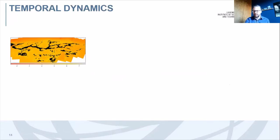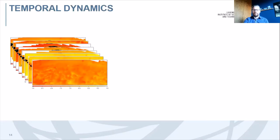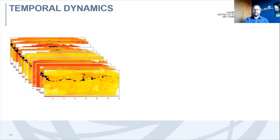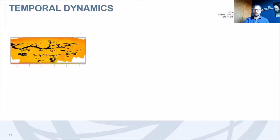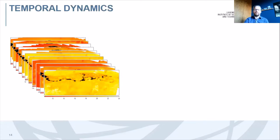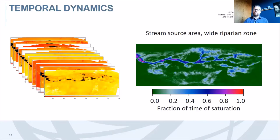Looking at the spatial-temporal dynamic of saturated areas: black indicates saturation, colored indicates non-saturated areas. Over about 18 months, we see the dynamic of saturation — starting in mid-fall, moving through the year to summer, and wetting up again. About a year later the catchment appears much drier; the extent of surface saturation is much smaller.